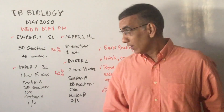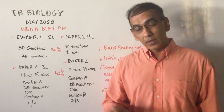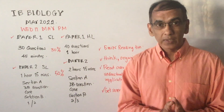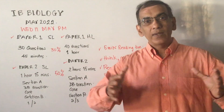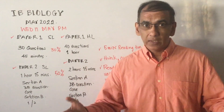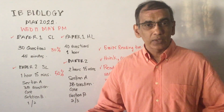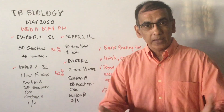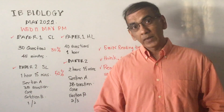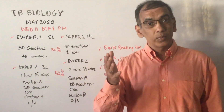Standard level students, you will have Paper 1 — your multiple choice — which is made up of 30 multiple choice questions. These questions span the six core syllabus topics that you have to study, so you could expect about five questions per topic. Question one will be lined up with topic one, and question 30 will be lined up with topic six.